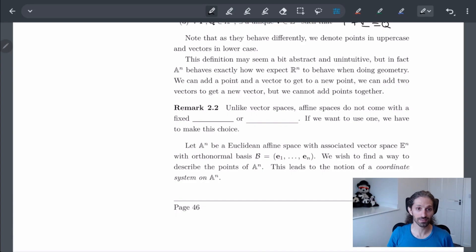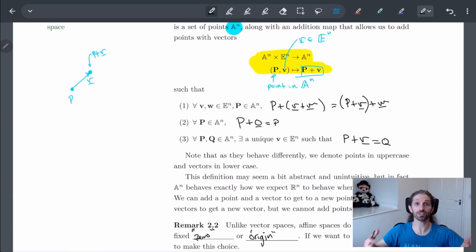Now, the main thing is, unlike vector spaces that have a very clear zero, there's a zero vector, affine spaces do not come with some fixed zero or some origin. There's no point zero. I never said this. Because if you think about this abstractly, what does having a point zero even mean?